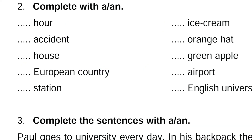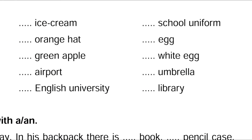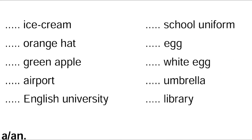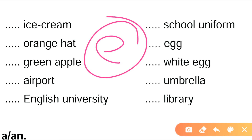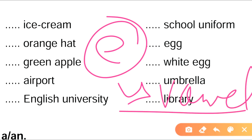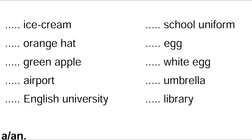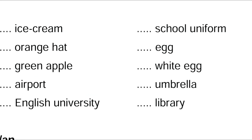Dash English university — 'E' gives a vowel sound, so 'an English university'. Dash school uniform — 'school' gives a consonant sound, so 'a school uniform'. But if we remove 'school' and just say 'uniform', it would be 'a uniform' because 'uniform' sounds like 'you', a consonant sound.